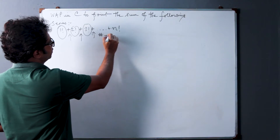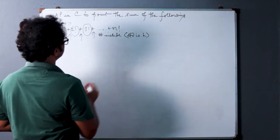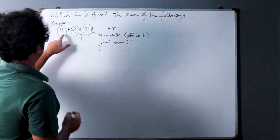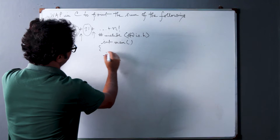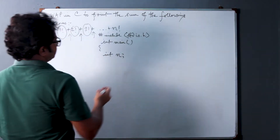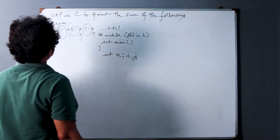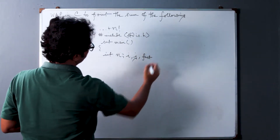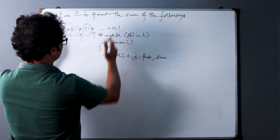hash include stdio.h, int main. Now, what are the variables to be taken? The variables are: n for the limit, i is the loop variable. For the inner loop variable, I take j, and we take two other variables — fact, which will calculate the factorial, and sum, which will calculate the ultimate sum of the series.